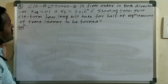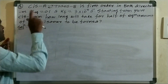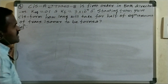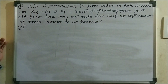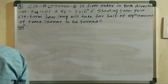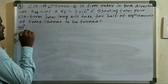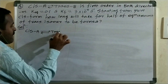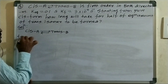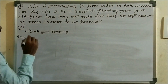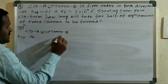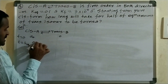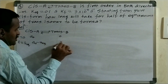The third problem: Cis-A is in equilibrium with Trans-B, first order in both directions. Equilibrium constant K_eq = 0.1, and Kf = 3×10⁻⁴ s⁻¹. Starting from pure cis form, how long will it take for half of the equilibrium amount of the trans isomer to be formed? At t = 0, concentration is A0 and 0; at time t, concentrations are A0 − X and X; at equilibrium, A0 − X_eq and X_eq.